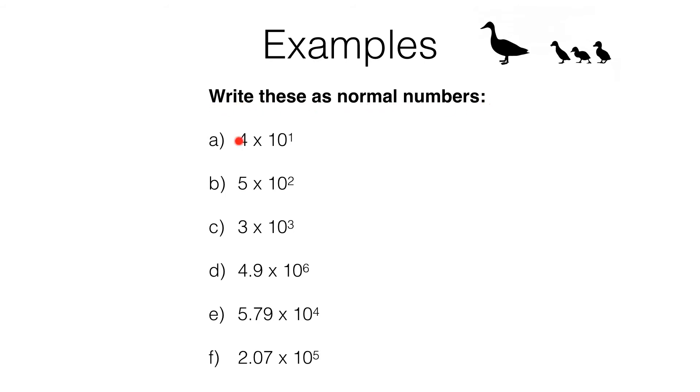So we are converting from standard form into an ordinary number, and we do this as follows: 4 times 10 to the power of 1 is just 4 times 10, because we know 10 to the power of 1 is just 10, and 4 times 10 is 40. And that's it. Pause the video and have a go at the next two for yourself.